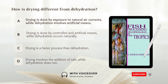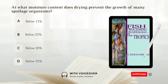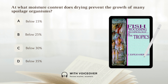At what moisture content does drying prevent the growth of many spoilage organisms? A. Below 15%. B. Below 25%. C. Below 30%. D. Below 35%. Answer: A. Below 15%.